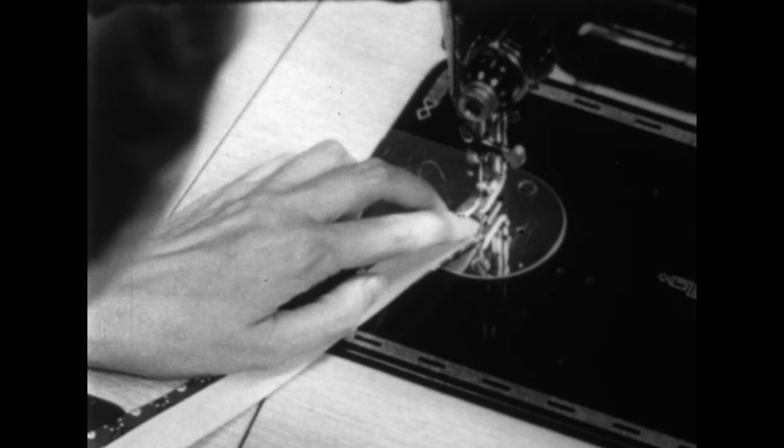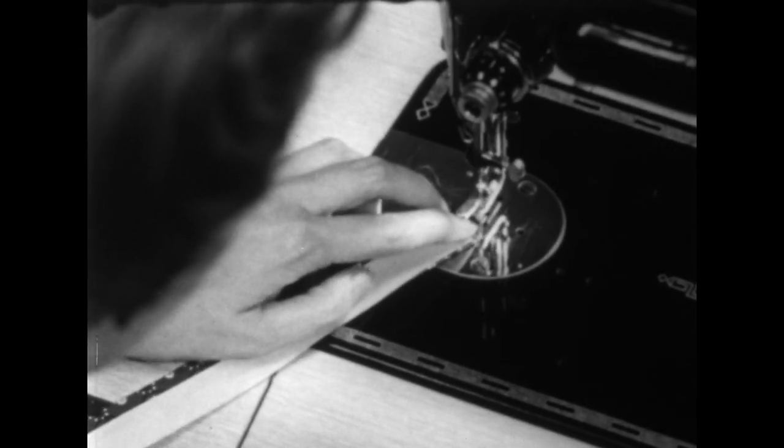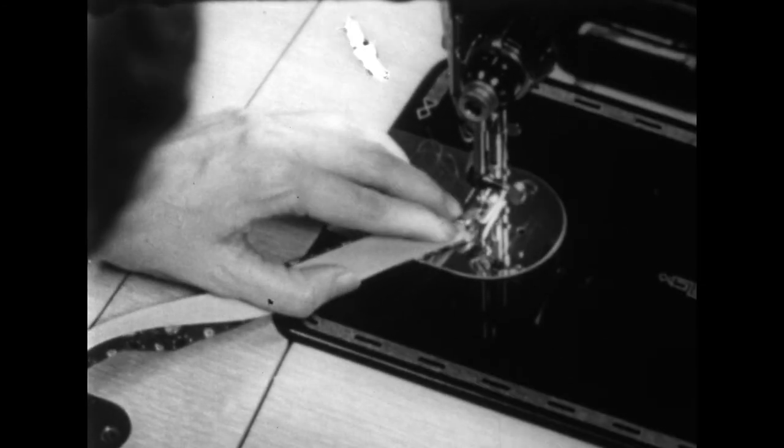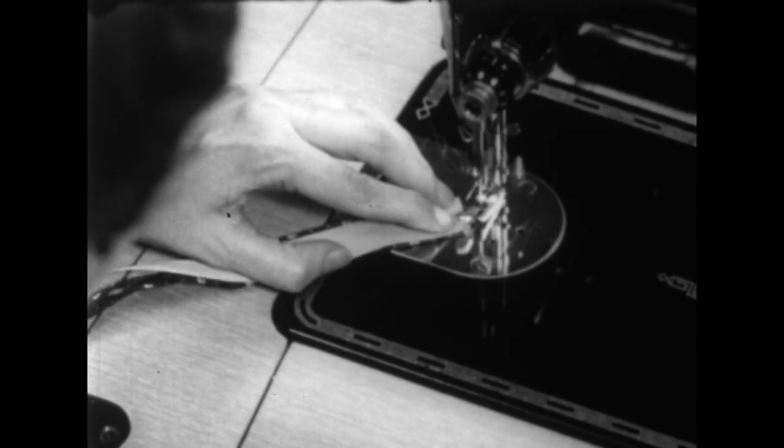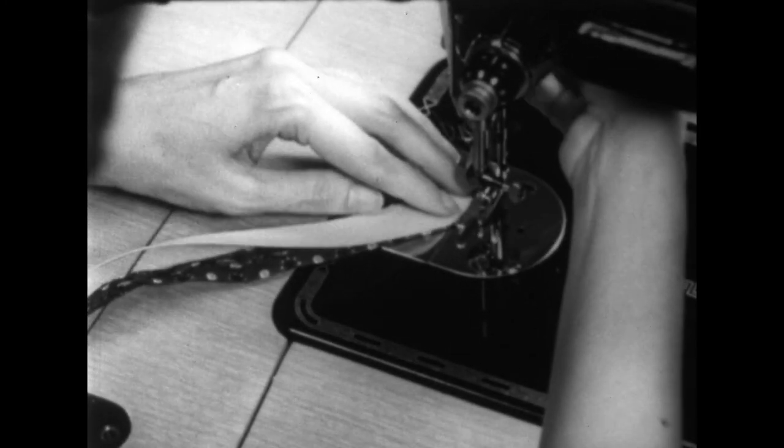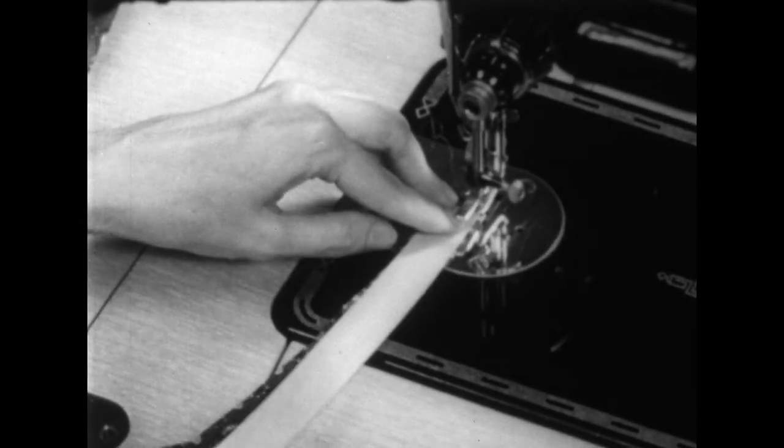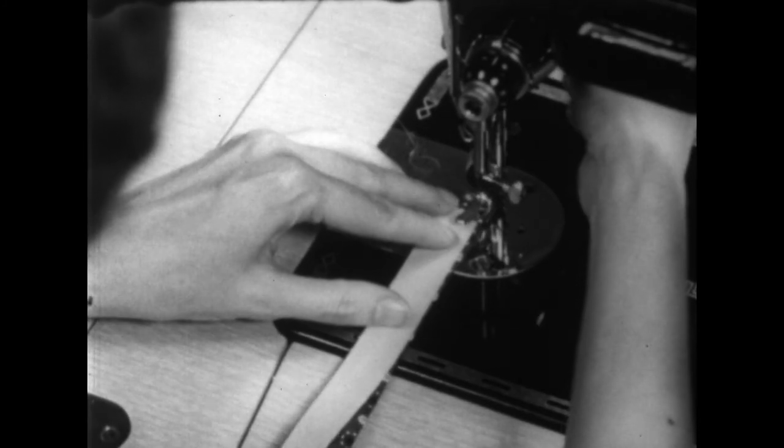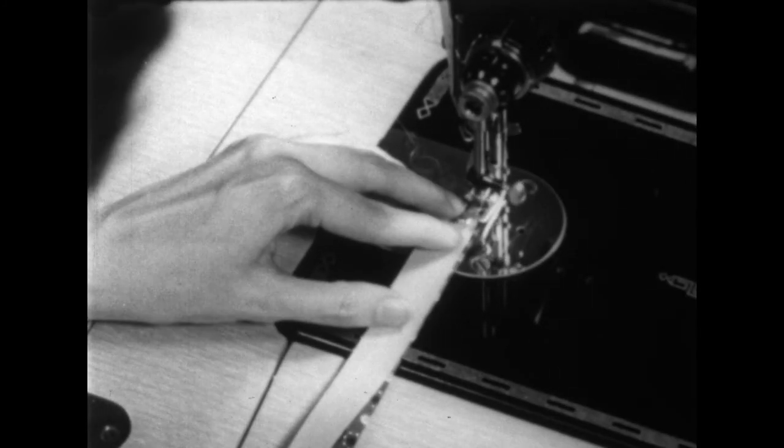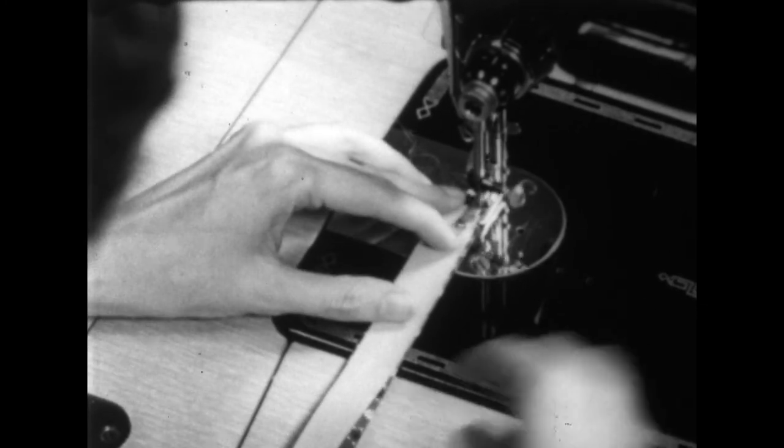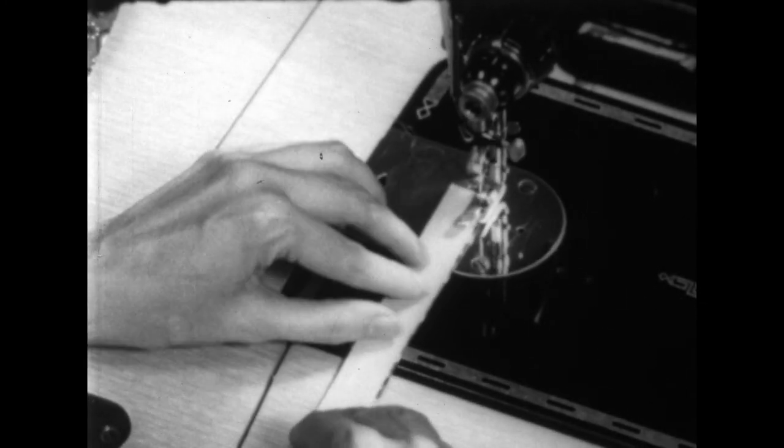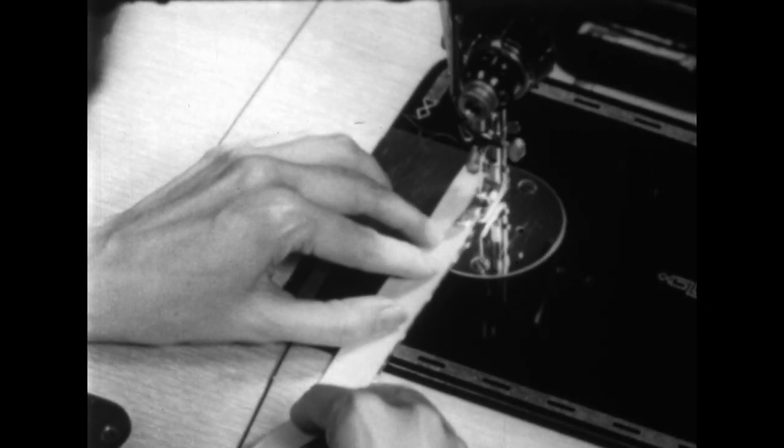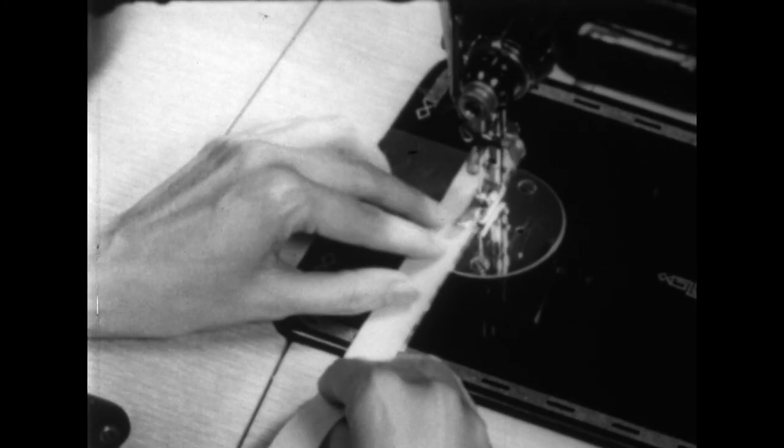Start stitching at the point and on the wrong side. After you've stitched from the point to the edge of your belting, leave your needle down, raise your presser foot, and turn your corner. Now you can use the edge of your belting as your seam guide.